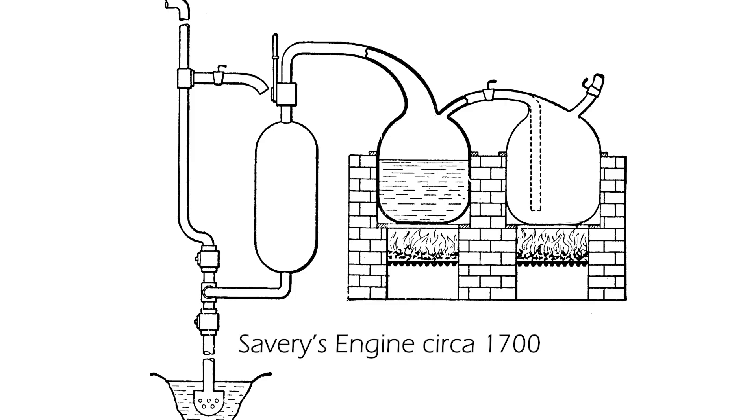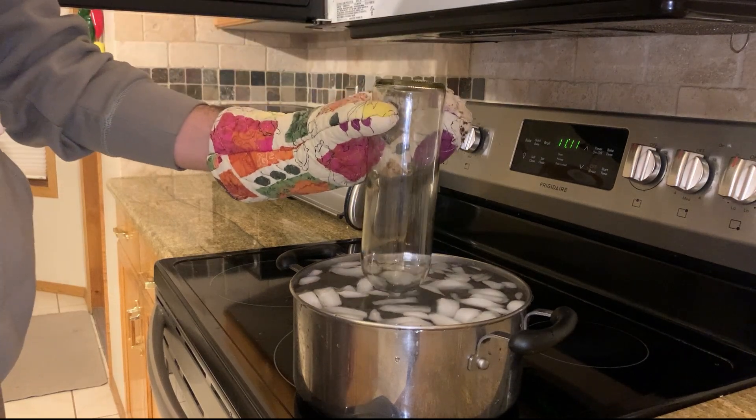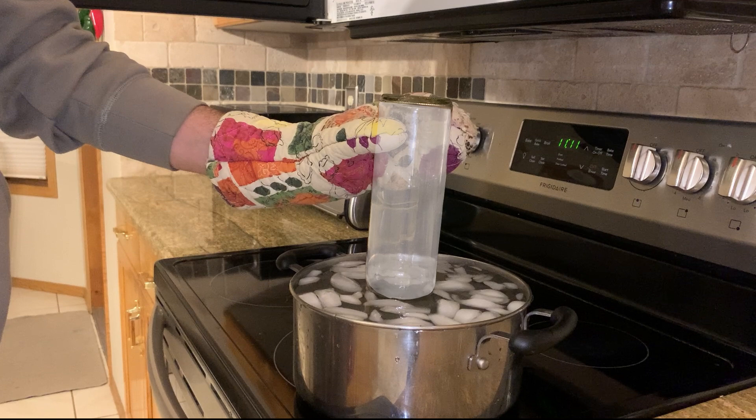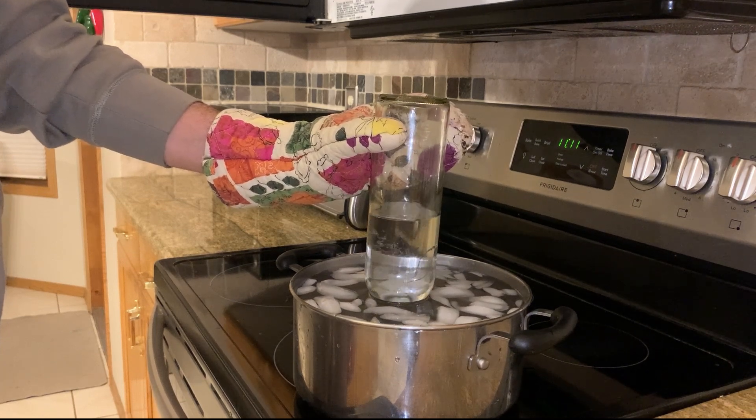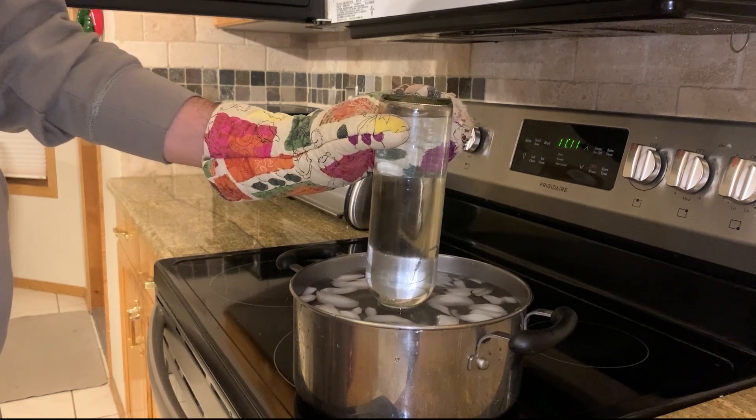Savory's engine basically worked like this. You boil water to make some steam, then you condense that steam, which forms a vacuum in the container and pulls the water up from the ground. Here's a quick demonstration. I've got a bottle that's full of steam. When I cool the bottle, the steam condenses into water and leaves a vacuum where the steam was. This creates a pressure gradient between the inside and outside of the bottle, which forces the water into it.